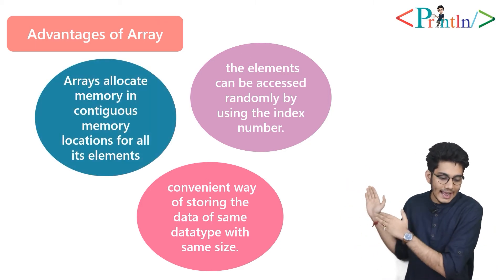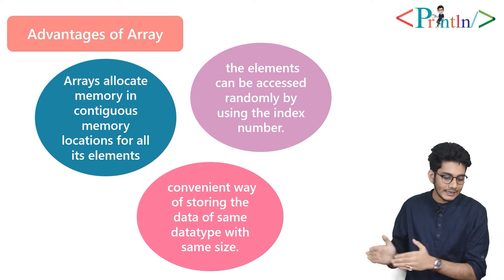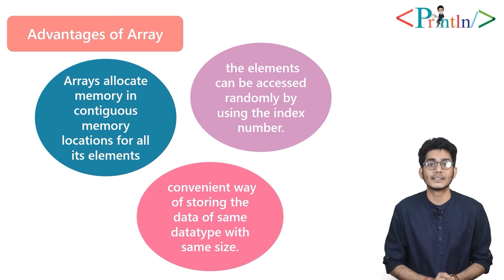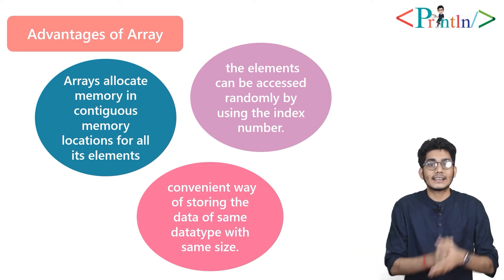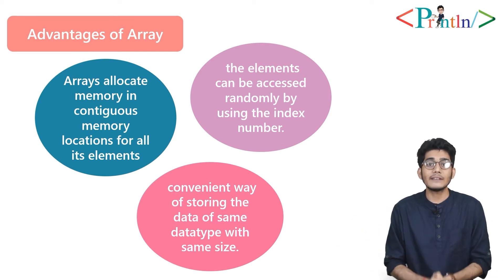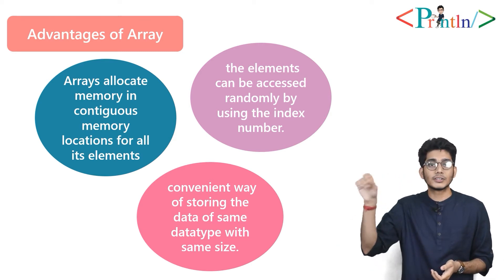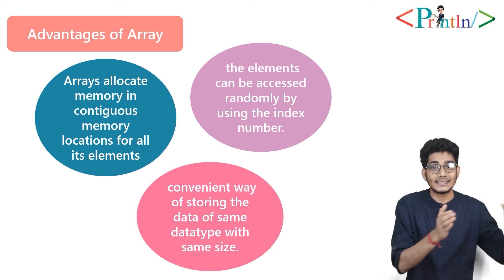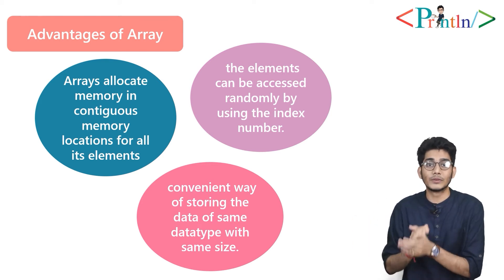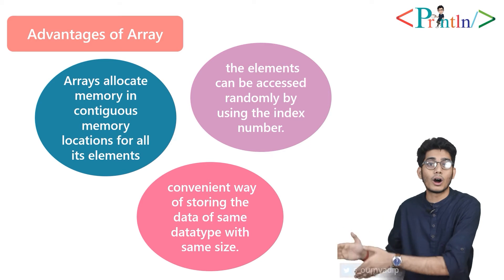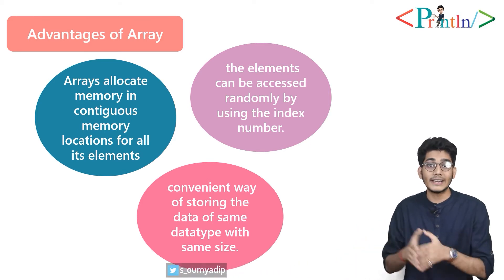Arrays allocate memory in contiguous memory locations for their elements — so an array is a contiguous memory structure. For example, if the first element has address 1000, the next index will be 1002 or 1004, depending on the size.